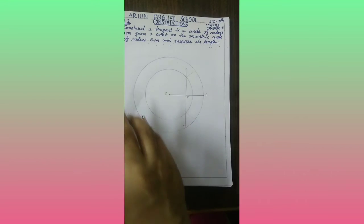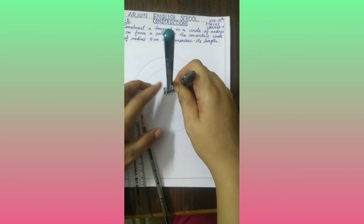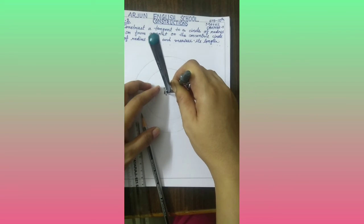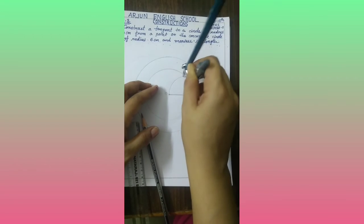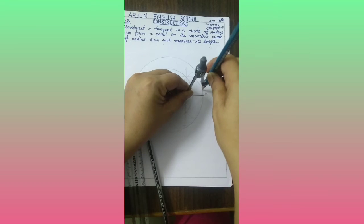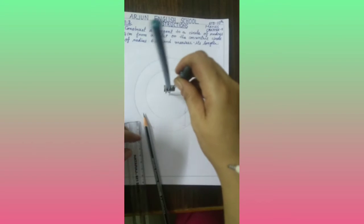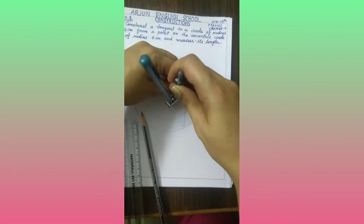And take M as center and radius of OM. And draw a circle with the help of your rounder.